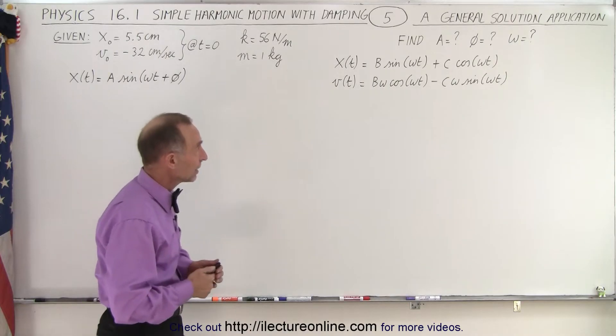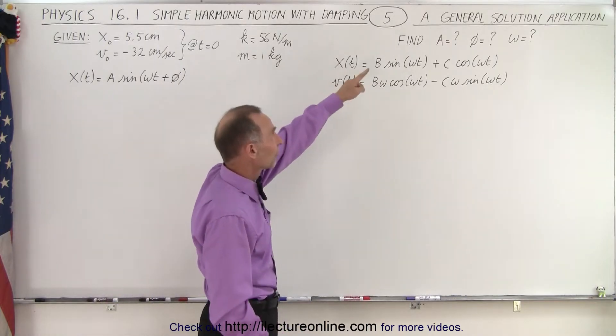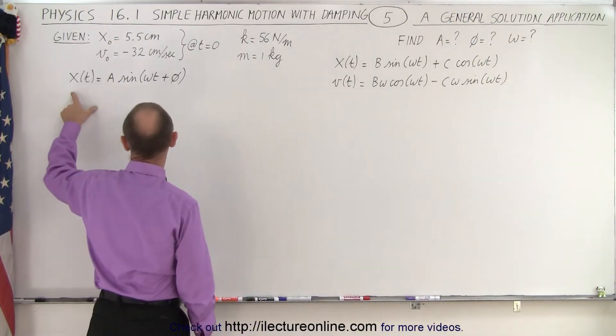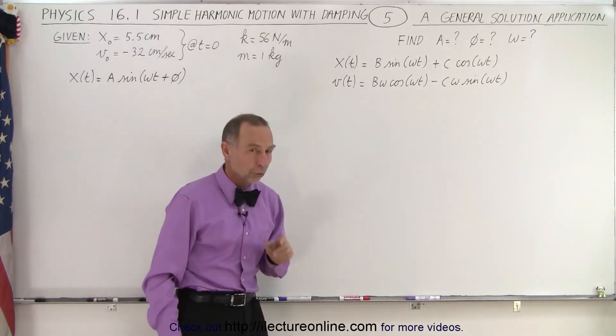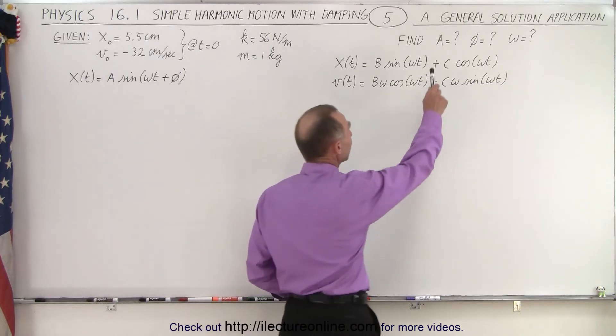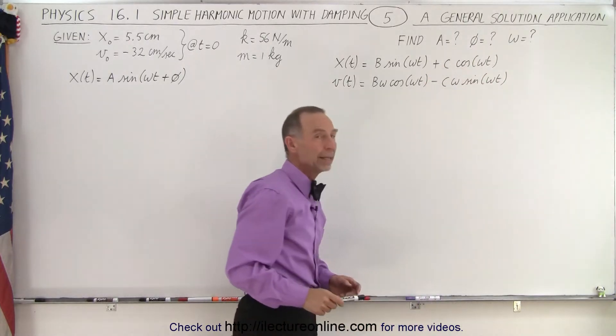Notice that the general solution can be written as the sum of the sine and the cosine, or it can be written as a combined solution where x(t) equals A times the sine of omega t plus a phase angle. So in order to find the final solution in this format, we'll need to find the amplitude, the phase angle, and omega.